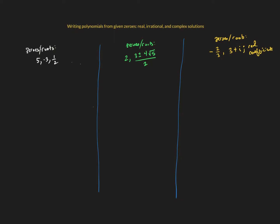We learned in the previous video that zeros or roots of a polynomial are associated with factors of that polynomial. We're going to use that information — given zeros or roots — to write the polynomial that matches those. I have three different problem types here and they're going to get progressively more complex. The first problem is similar to what we did with quadratics. We're given three roots: 5, negative 3, and one-half. Each of those is a value of x, and if we take each of those little equations and get them all on the same side, those would be factors of the polynomial.